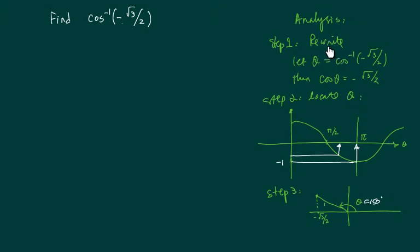Here are the steps. Whenever we're given an inverse function of something, we're going to rewrite this and let theta equal to this thing. And then that's just another way to write cosine of this angle becomes minus radical 3 over 2. That's step 1. We're going to rewrite this inverse cosine.